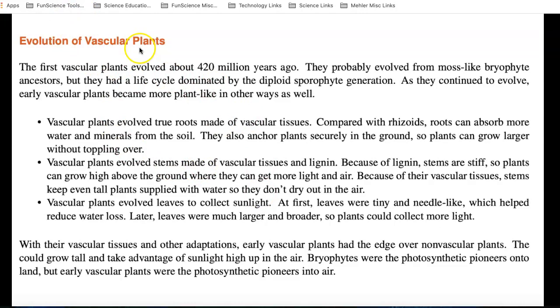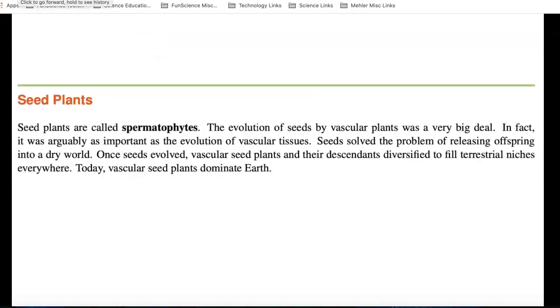Besides having those tubes inside them, the xylem and phloem, which made vascular plants so much better than non-vascular plants, they also evolved seeds. Seed plants are called spermatophytes. The evolution of seeds by vascular plants was a really big deal. Seeds solve the problem of releasing offspring into a dry world. Because once seeds evolved, vascular seed plants and their descendants diversified into terrestrial niches everywhere. Today, vascular seed plants dominate the earth.